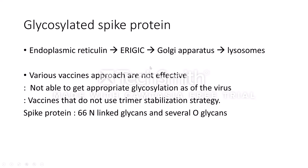After the Golgi, it goes to the trans Golgi network, where it is directed to the lysosome and then to the extracellular matrix to infect other cells. Various vaccines are not fully effective because the glycosylation that occurs in the wild-type SARS-CoV-2 virus does not closely match the glycosylation targeted by vaccines, since many vaccines target virus-like particles rather than the actual virus, and differences exist between their glycosylation profiles.